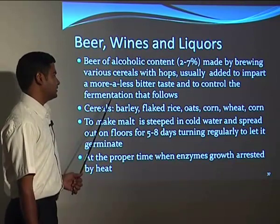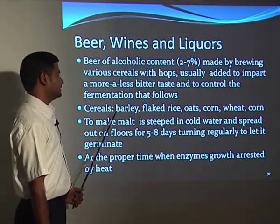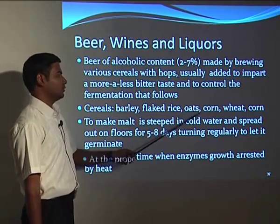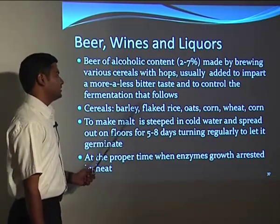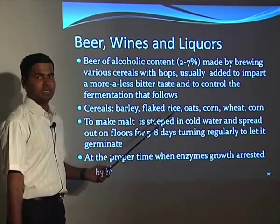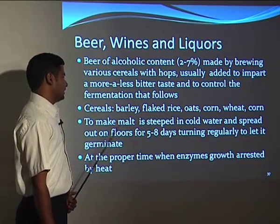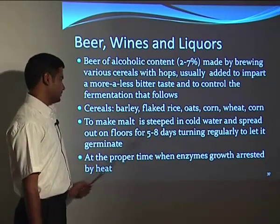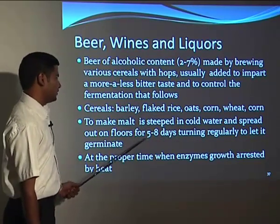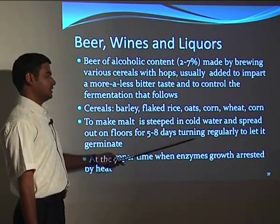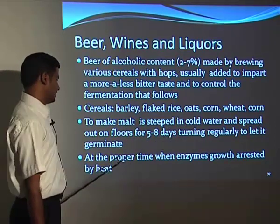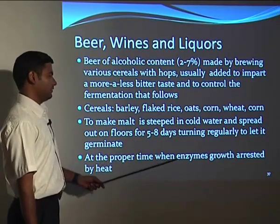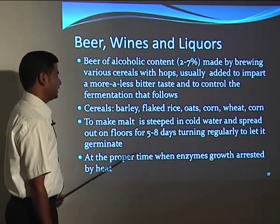The raw materials used are cereals including barley, flaked rice, oats, corn, and wheat — all of which contain a major starch content. To make malt, barley is steeped in cold water and spread out on floors for 5 to 8 days, turned regularly to allow germination. At the proper time, enzyme growth is arrested by heat.